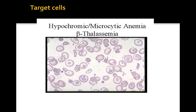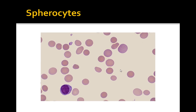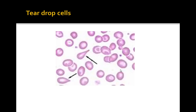Target cells are common in liver disease, hemoglobinopathies, and splenectomy patients. Hypochromic microcytic anemia is a very common finding. Spherocytes are common in sickle cell anemia. Teardrop cells, also known as dacrocytes, are common in myelofibrosis or megaloblastic anemia, but mainly myelofibrosis.